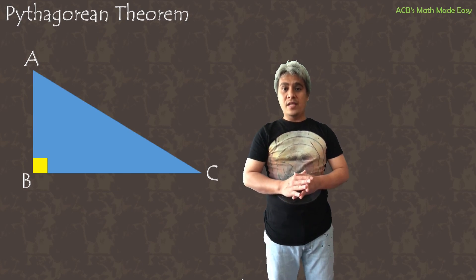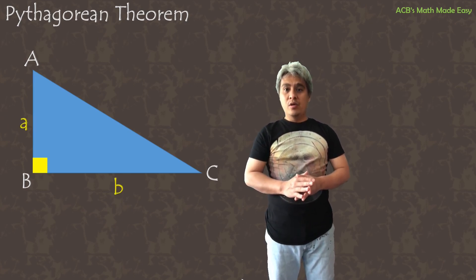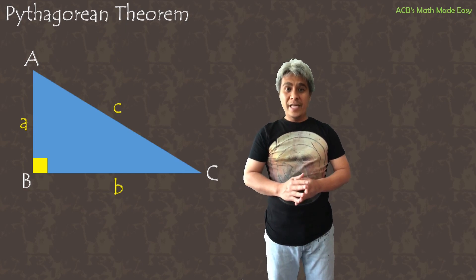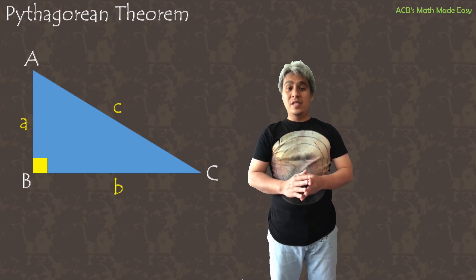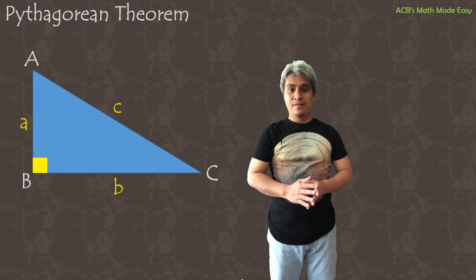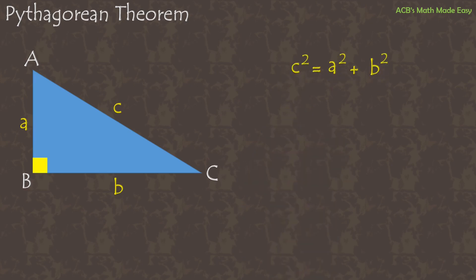The three sides of the triangle we will name with a, b, and c — this time with small letters. This is our formula: c squared equals a squared plus b squared.